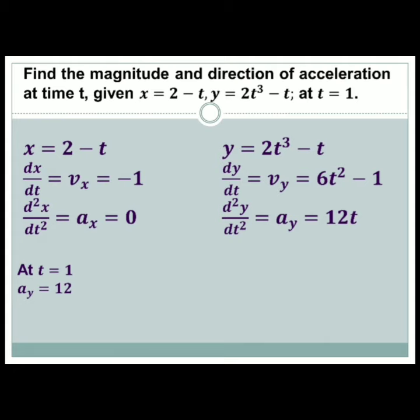Our example is: find the magnitude and direction of acceleration at time t, given x equals 2 minus t, y equals 2t³ minus t, at t equals 1.